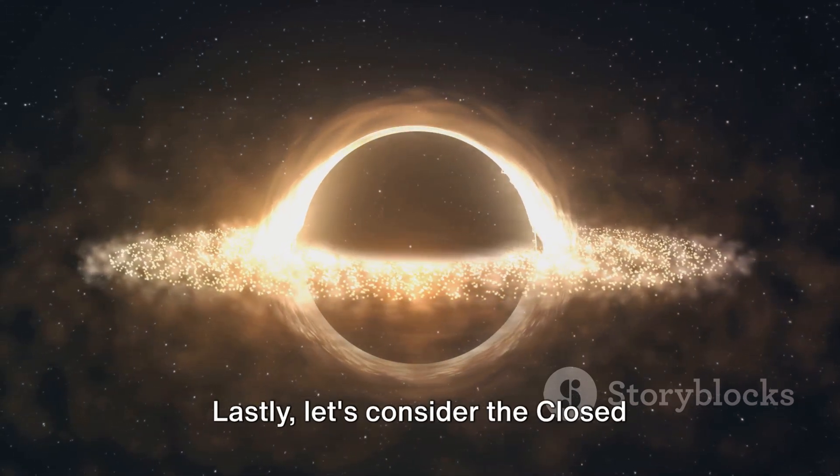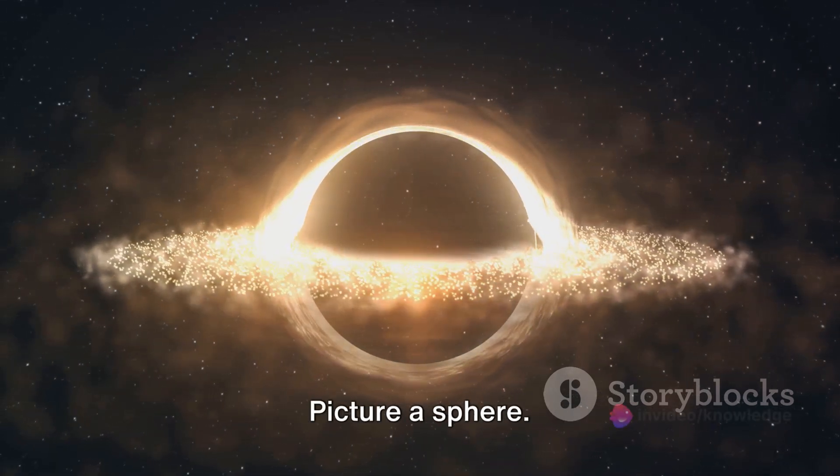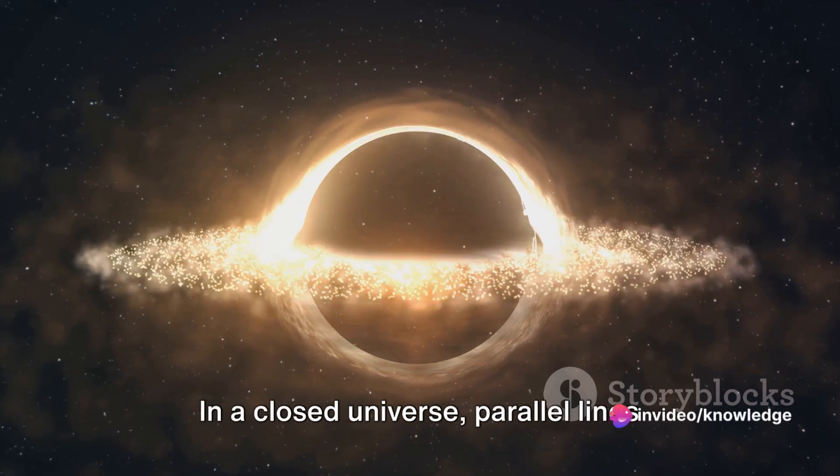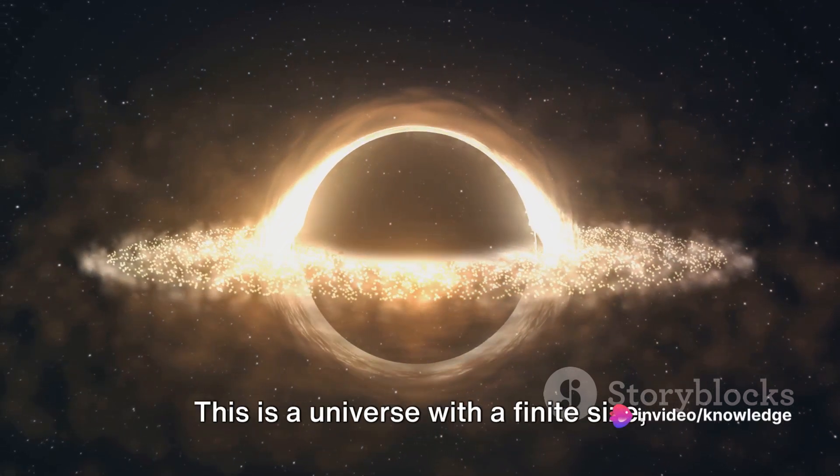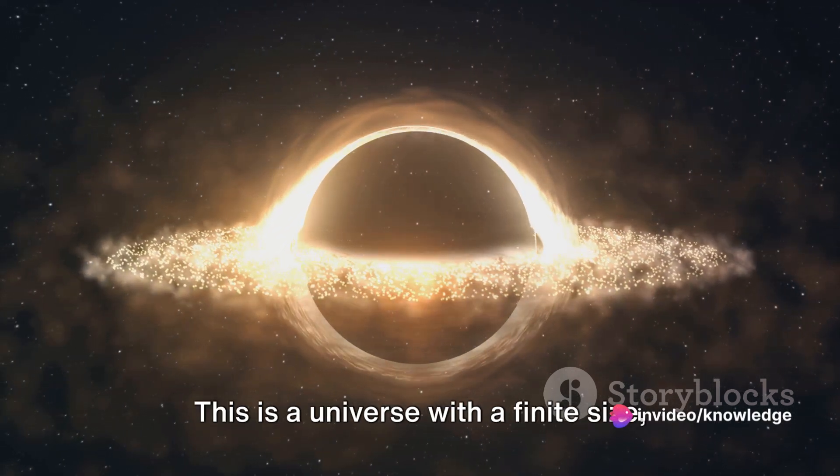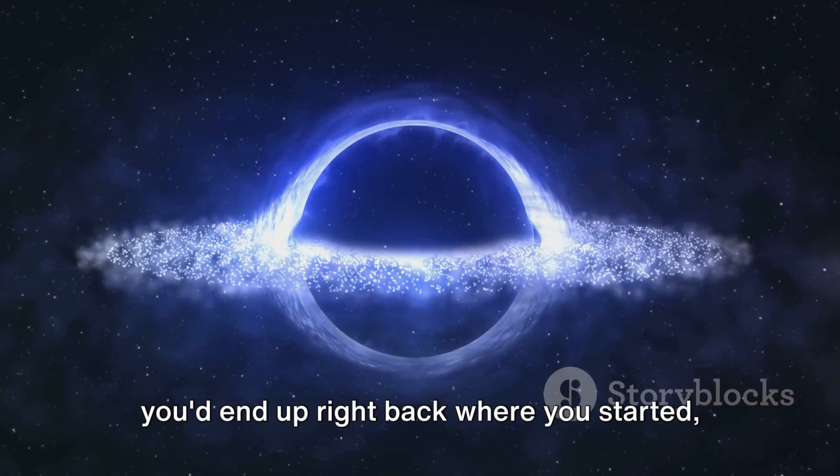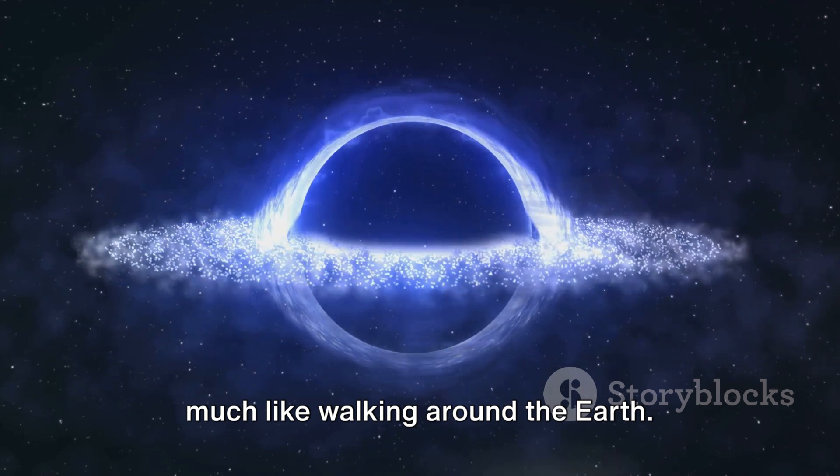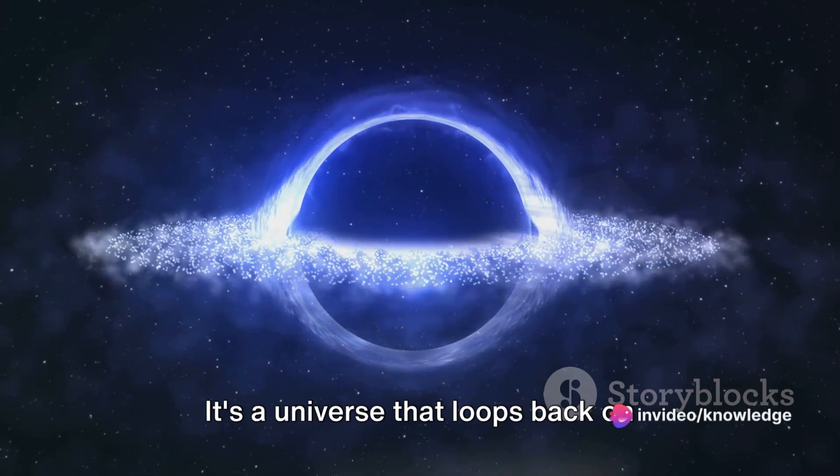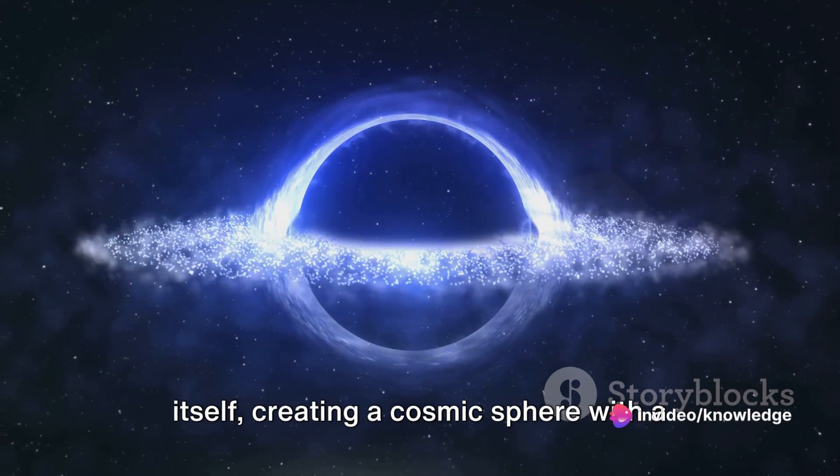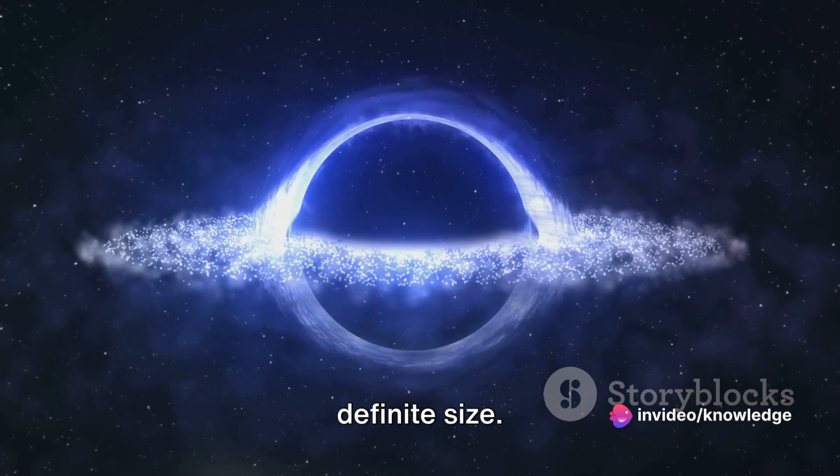Lastly, let's consider the closed universe theory. Picture a sphere. In a closed universe, parallel lines would eventually meet. This is a universe with a finite size, but don't let that fool you. Travel in one direction long enough, and you'd end up right back where you started. Much like walking around the Earth, it's a universe that loops back on itself, creating a cosmic sphere with a definite size.